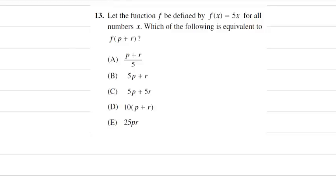Here's a question from College Board's 2004 practice test. Let the function f be defined as f(x) equals 5x for all numbers x. Which of the following is equivalent to f(p plus r)? f(p plus r) is a fancy way of saying that in my function, wherever I see an x, I can just plug in p plus r.